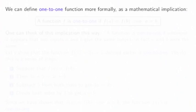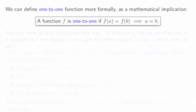We can define one-to-one function more formally as a mathematical implication. A function f is one-to-one if f(a) = f(b) implies a = b.